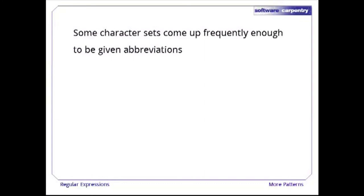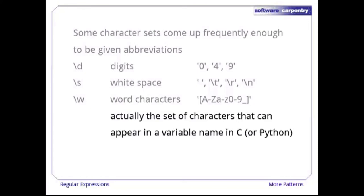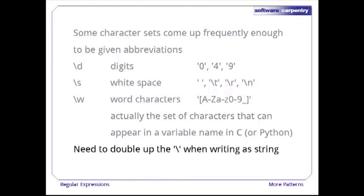Now we can look at character sets that come up frequently enough to deserve their own abbreviations. Backslash-d matches digits 0 through 9. Backslash-s matches whitespace characters: space, tab, carriage return, and newline. Backslash-w matches word characters — equivalent to uppercase letters, lowercase letters, digits, and the underscore. In order to write one of these in a Python string, you have to double up the backslashes.